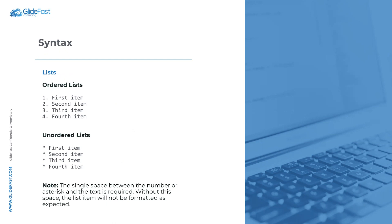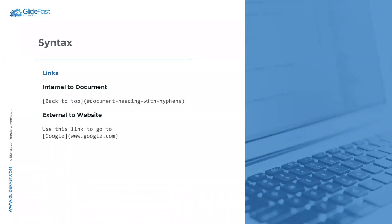Ordered lists are exactly as you'd expect: type a number, dot, space, then the list item. Unordered lists use an asterisk or a dash — the space after the marker is required. You can also combine them: under an ordered list item you can add an indented unordered bullet very easily.